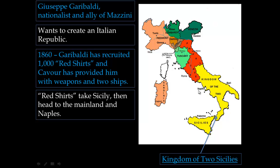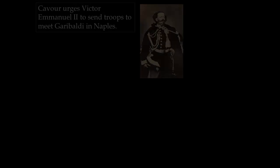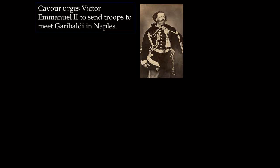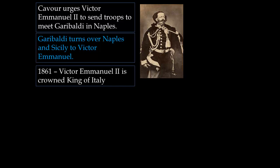The Red Shirts are able to take Sicily, then head to the mainland towards Naples. This worries Cavour, who fears Garibaldi will set up his own republic in the south. Cavour urges his king, Victor Emmanuel, to send troops to meet Garibaldi in Naples — basically to stop or slow him down. However, Garibaldi actually turns over Naples and Sicily to Victor Emmanuel, realizing they are both nationalists. In 1861, Victor Emmanuel is crowned king of Italy.